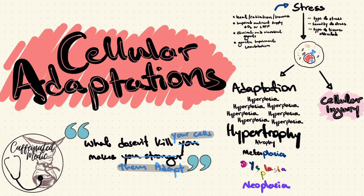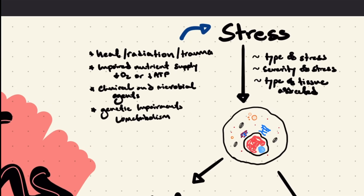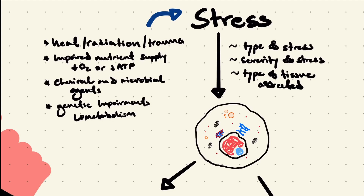Our tissues and cells can't adapt to all types of stress or all severities of stress. If the stress is too severe, then the stress may injure our cells — we'll look into cellular injury in more detail in the next video. Stress is anything that affects the functioning capacity of cells, tissues, organs, or organ systems. Examples include physical agents such as heat, radiation, or trauma, impaired nutrient supply, chemical or microbial agents, as well as genetic impairments that influence metabolism.